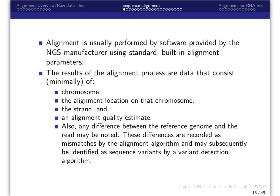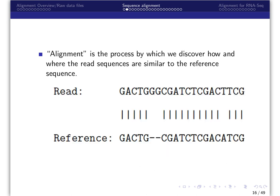Any difference between the reference genome and the read may also be noted. These differences are recorded as mismatches by the alignment algorithm and may subsequently be identified as sequence variants by a variant detection algorithm. Alignment is the process by which we discover how and where the read sequences are similar to the reference sequence, and alignment is a result from this process.